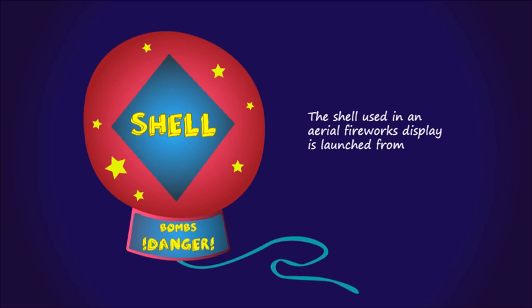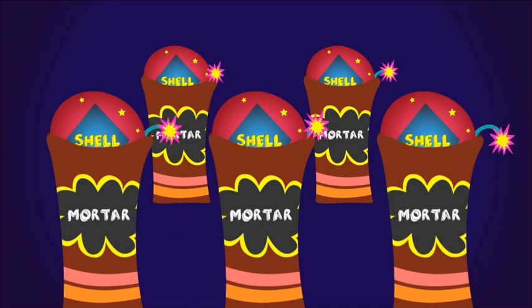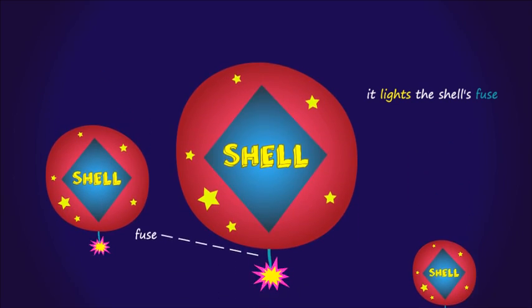The shell used in an aerial firework display is launched from a mortar. When the lifting charge fires to launch the shell, it lights the shell's fuse.